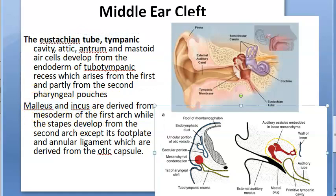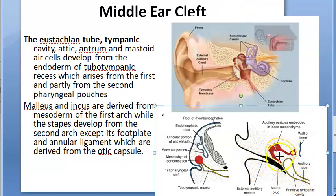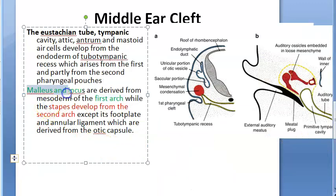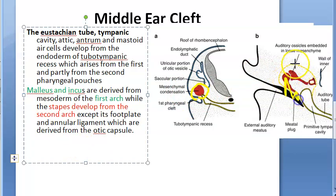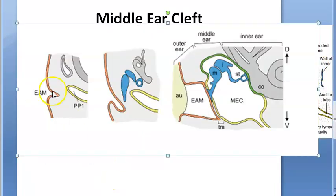Now, how do the malleus and incus form? Here they have shown how the ossicles come. They are derived from mesoderm - they are neither from the cleft nor the pouch but somewhere in the middle. The malleus and incus develop from the mesoderm of the first arch, while the stapes comes from the second arch. You can see these mesenchymal condensations forming the malleus, incus, and stapes, which then enter the tympanic cavity formed by the pouch.